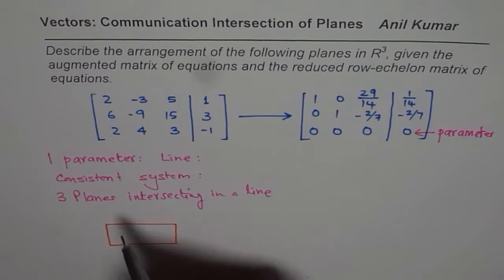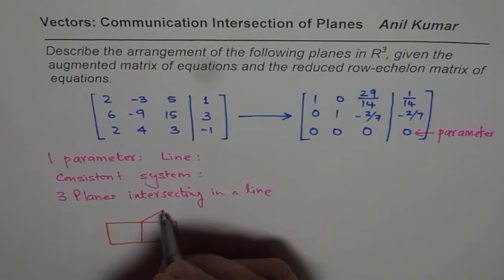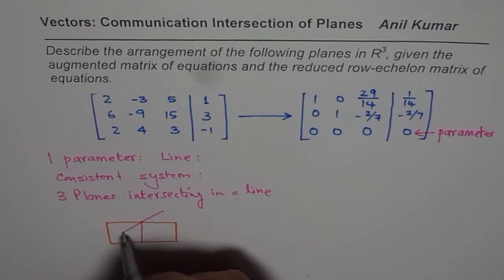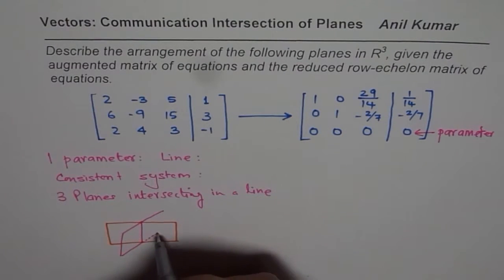Let us say this is one plane, and that is the line of intersection between the three planes. Let us say this is the third, second plane. We can do like this.